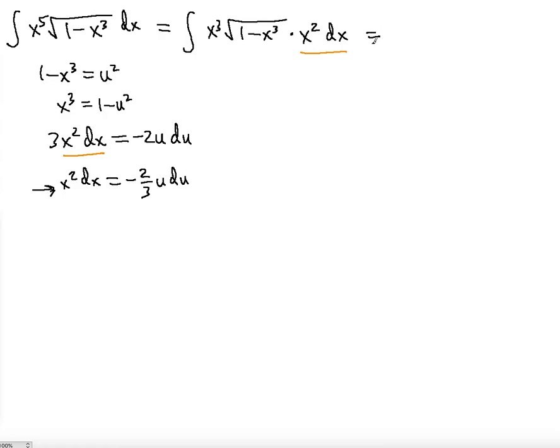Let's keep going. x to the third was 1 minus u squared. 1 minus x to the third was set to u squared, so the square root of that is just u. And then x squared dx equals negative 2 thirds u du. Let's put the negative 2 thirds outside for convenience, and then u du.